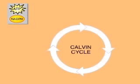So far, energy from light has been stored in the chemical bonds of ATP and NADPH. In the Calvin cycle, this stored energy is used to produce sugar molecules. The Calvin cycle is a complex series of chemical reactions carried out in the stroma.